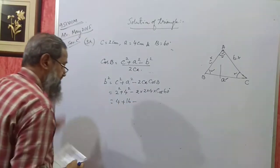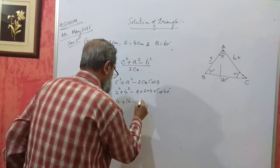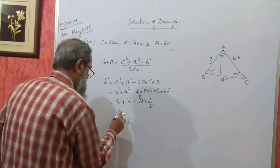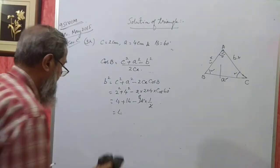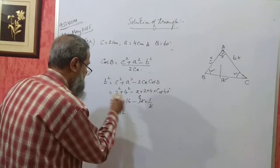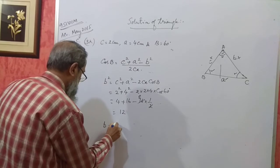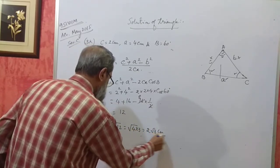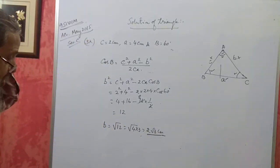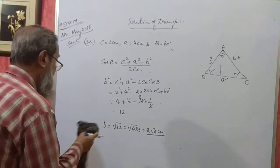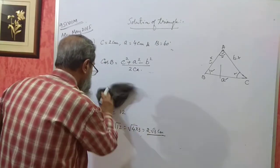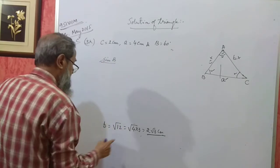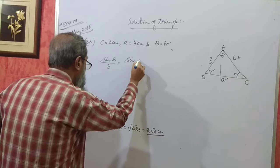c squared is 2² = 4, plus 4² = 16, minus 2 into c=2 and a=4, times cos 60 which is half. So 4 plus 16 is 20, minus 8 is 12. b² is 12, so b equals root of 12, which can be written as root of 4 into 3, giving b equal to 2 root 3 centimeters.